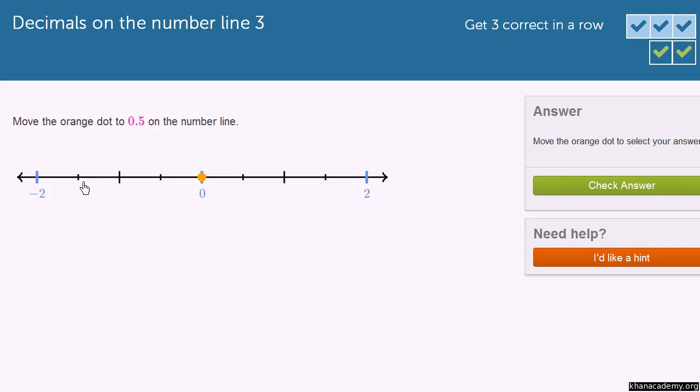Let's do one more of these. Move the orange dot to 0.5 on the number line. Well, once again, we have the same scale. It's important to always check the scale. And this right over here is 1. So 0.5 would be halfway. It's that little small mark right over there.